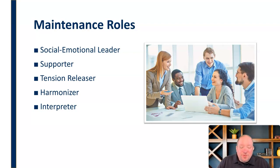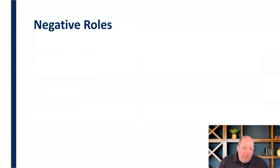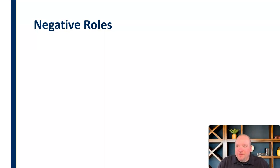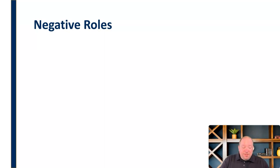Task roles and maintenance roles are all very positive and help the group achieve its function. But there's a third category — negative roles — which are things that detract from group performance and prevent the group from achieving what it's doing. There are two kinds of negative roles, two categories really, so let's take a look at each of those and the specific roles within them.